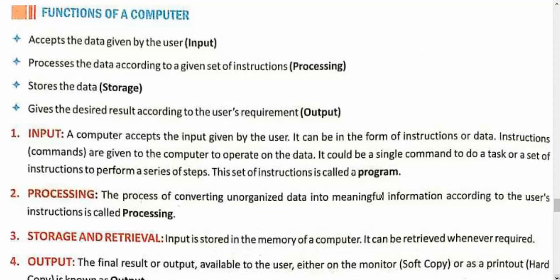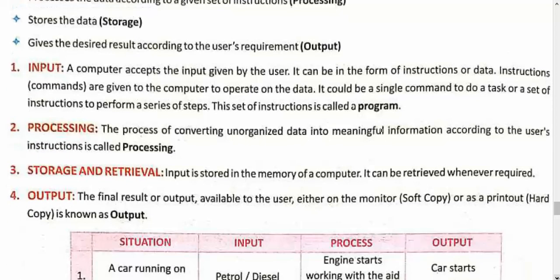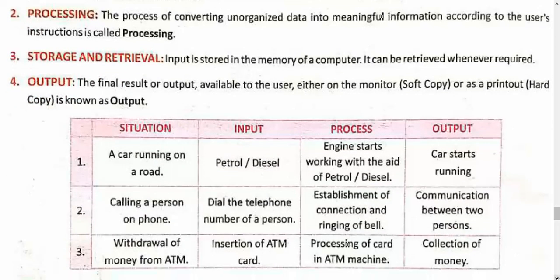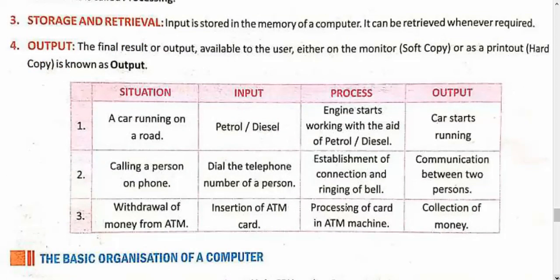Output — there are two types: hard copy and soft copy. What we see on the screen is your soft copy — whether on a monitor or a mobile screen. If you take a print out of it, then it becomes the hard copy. There is an example for this — it's simple.